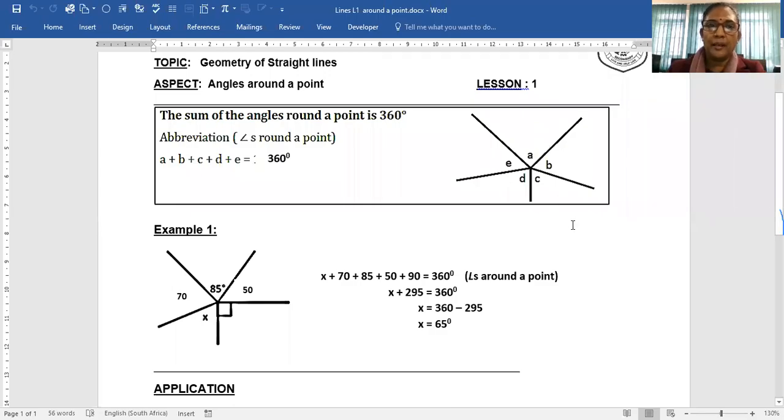Hello boys and girls, welcome to geometry of straight lines grade 8. We're looking at angles around the point, and if you look at this diagram here, all these angles, the sum of the angles around the point is 360 degrees.